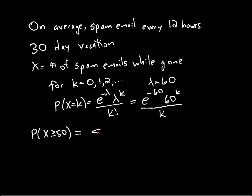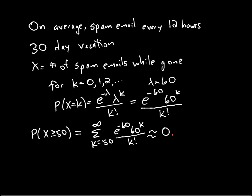Alright, so this probability was the sum from K equals 50 to infinity of our distribution function: E to the minus 60, 60 to the K, all over K factorial. And we found that this was about 0.9156. So it's about a 92% chance that if I go on a 30-day vacation, I'll end up with at least 50 emails in my inbox.